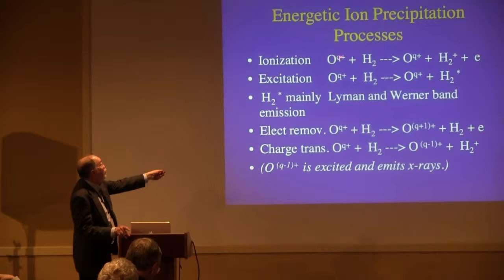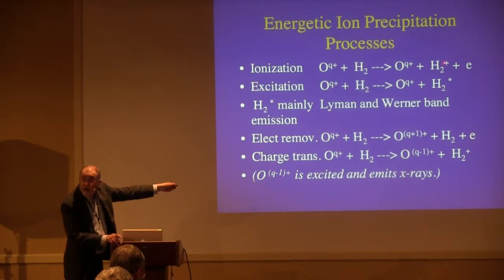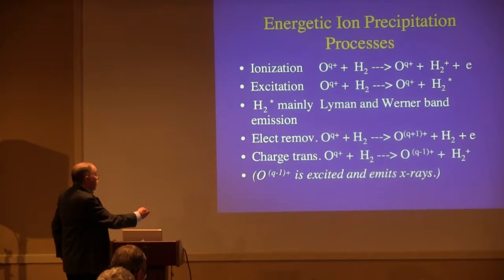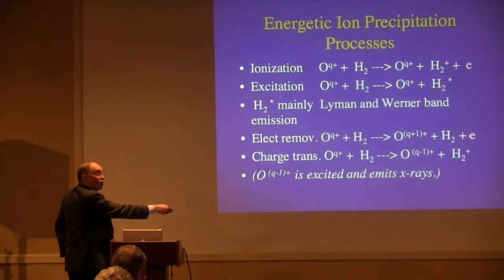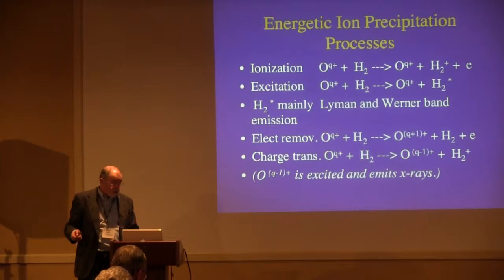Here are the processes: an O or S ion at charge state Q — we include Q from 1 through 8, and sulfur even higher — and you can ionize, which is the main energy loss. We track the electrons now too in our latest models with the two-stream code. You can excite Lyman-Werner bands — electrons can excite those bands, a more important source of that. And here's the key one: electron removal. You strip the ion of an orbital electron. The X-ray-producing process is charge exchange — the product ion is in a high principal quantum number, always around n=4 or 5. Hence when it de-excites, at least one of those photons, if you're in high charge states, will emit X-rays. If you're not in high charge states, it'll emit UV photons.